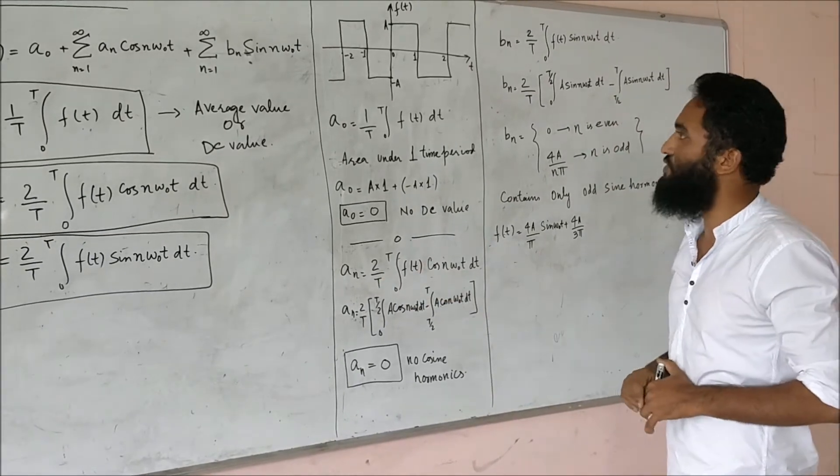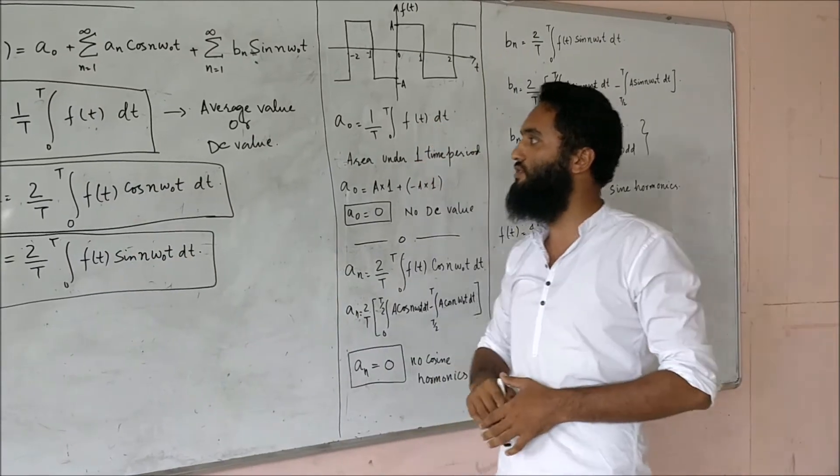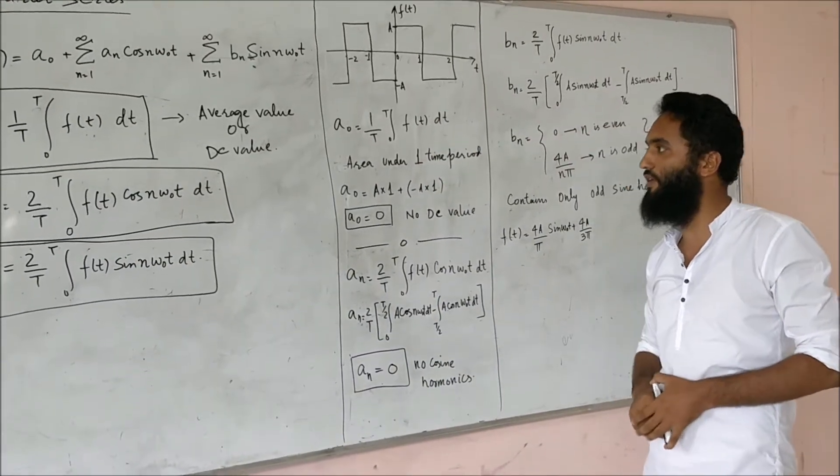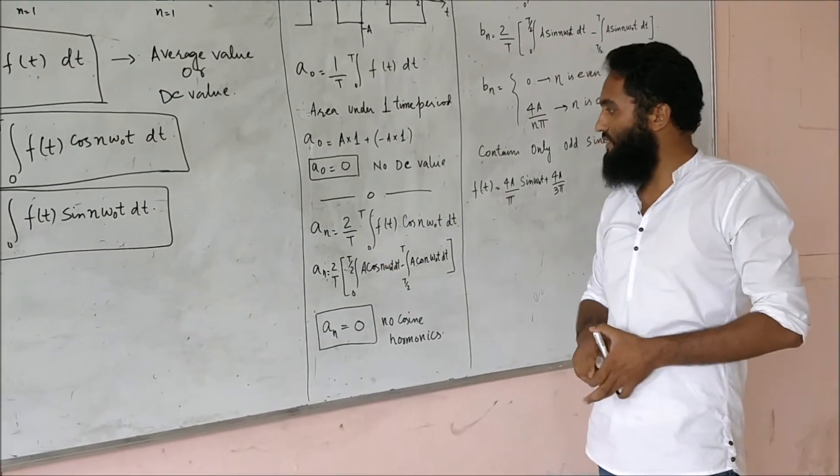For the weighting of the cosine harmonics, I have to find this a_n which I earlier said will be equal to 2 by T, 0 to T, f(t) cos(n omega_0 t) dt. For this thing, if I solve this integral, there will be two values.